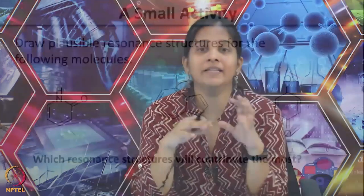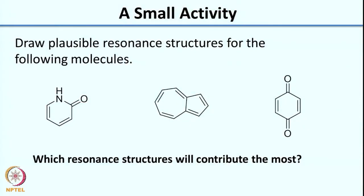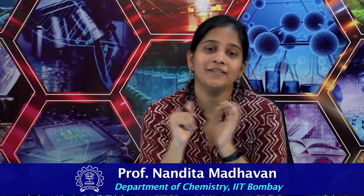Before we stop this lecture, I would like you to do a mini homework: try to draw plausible resonance structures for the three molecules shown on the screen, and figure out which resonance structure will contribute more for each. Remember the rules of resonance from the earlier slides and use the concept of arrow pushing to clearly show each resonance structure. If you have any doubts, take this up in the discussion forum, but first spend the effort yourself. Thank you, and we will see you in the next lecture where we will look at the answers to this problem.